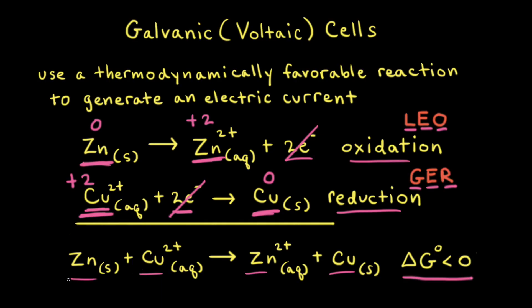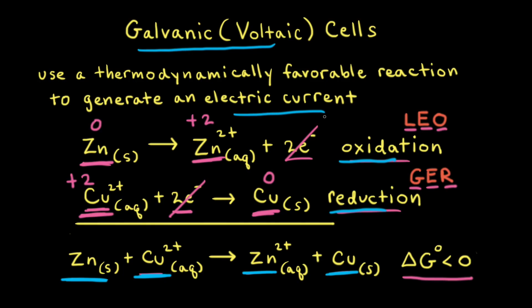Therefore, if we were to put a piece of solid zinc in an aqueous solution of copper two plus ions, we would see copper metal form on the zinc metal and zinc two plus ions would form in solution. In a galvanic or voltaic cell, each half reaction gets its own compartment, and the two compartments are connected with a wire. Therefore, a thermodynamically favorable redox reaction is used to generate an electric current — that is, the flow of electrons — in the wire.